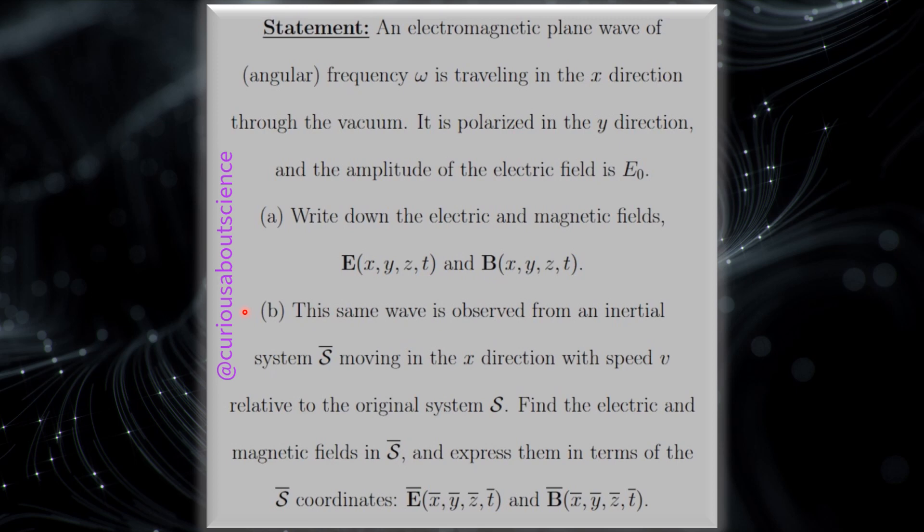Part B, the same wave is observed from the inertial system S bar moving in the x direction with speed V relative to the original system S. Find the electric and magnetic fields in S bar and express them in terms of the S bar coordinates, so E bar of x, y, z, t bar, and B bar of x, y, z, t bar.